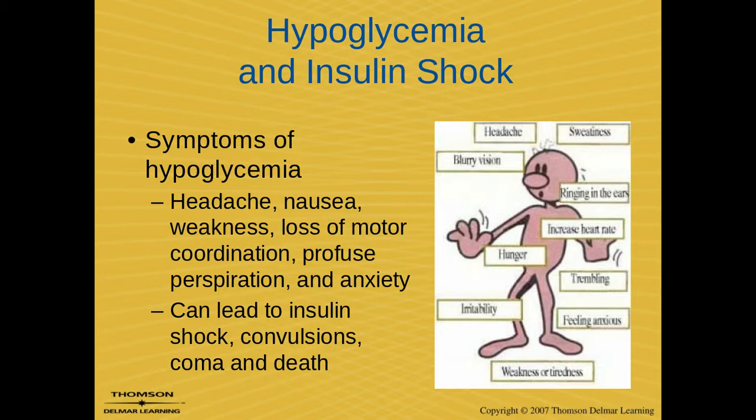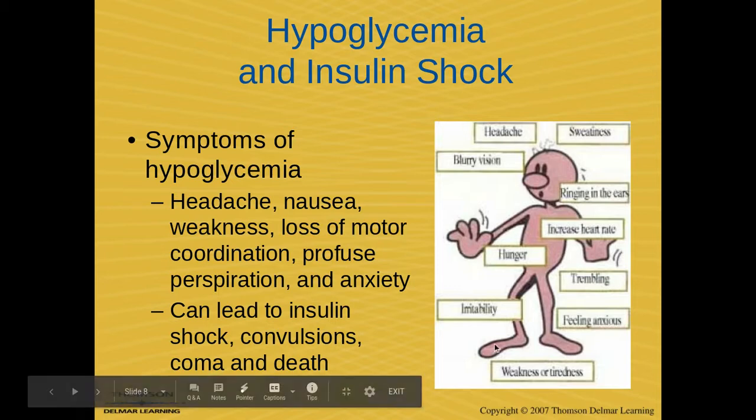If their blood sugar goes low, provide them with something high in carbohydrates. Make sure you are not administering insulin — insulin is what brings blood sugar down, so if their blood sugar is already low, giving them insulin can kill them. Only the patient or athlete should administer insulin. If they are unconscious you cannot give them any food since they can't swallow, so call 911 in that case — you don't want them to go into a coma or cause death.